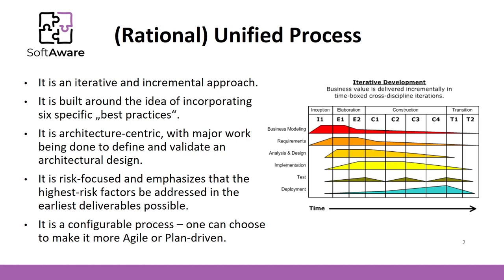Together they further developed the Objectory Process, known as the Rational Objectory Process, and the Unified Method which later became known as UML. In 1998, Rational changed the name to the Rational Unified Process. However, because RUP was trademarked property of Rational, further work by the software and academic community usually referred to just the Unified Process to avoid trademark issues. IBM acquired Rational Software in 2003 and in 2005 donated the core of the Rational Process to the open source community.